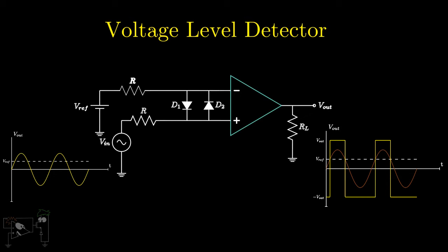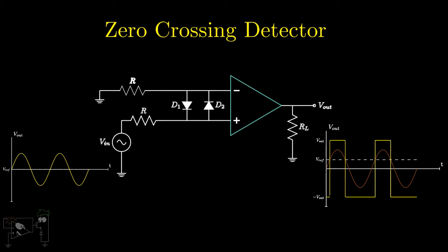This circuit can be further changed into a zero-crossing detector simply by making Vref a zero. The output remains at plus or minus Vsat and toggles at every zero-crossing. This circuit is also known as the sine wave to square wave converter.